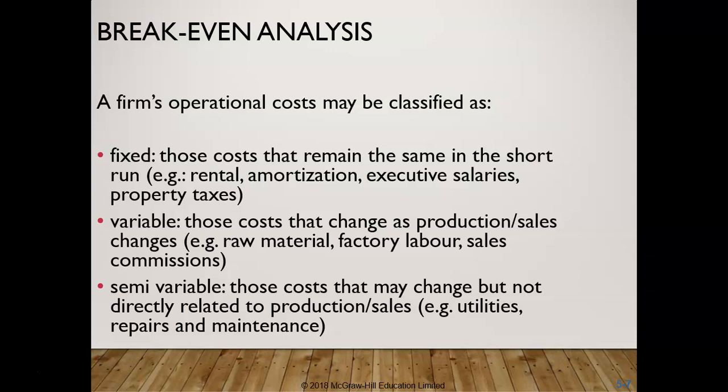A firm's operating costs may be classified into fixed, variable, and semi-variable costs. Fixed costs remain the same in the short run — examples are rent, amortization, executive salaries, and property taxes. Variable costs change as production or sales change — examples include raw materials, factory labor, and sales commissions. Semi-variable costs may change but are not directly related to production or sales — examples include utilities, repairs, and maintenance. For our purposes, semi-variable costs will be grouped with variable costs.